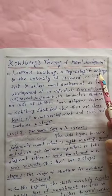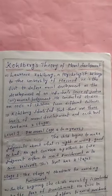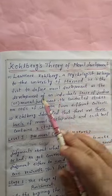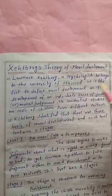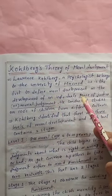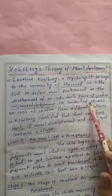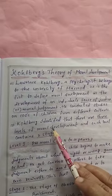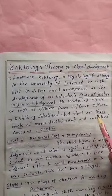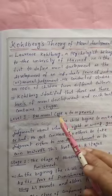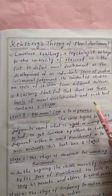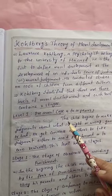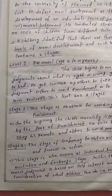Lawrence Kohlberg, a psychologist at Harvard University, was the first to define moral development as the development of an individual's sense of justice or moral judgment. He conducted studies on hundreds of children from different cultures. Kohlberg identified that there are three levels of moral development, and each level contains two stages.